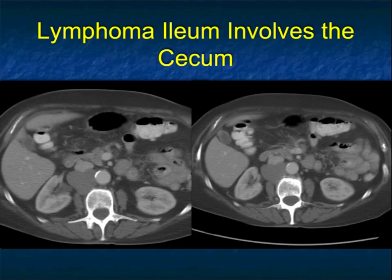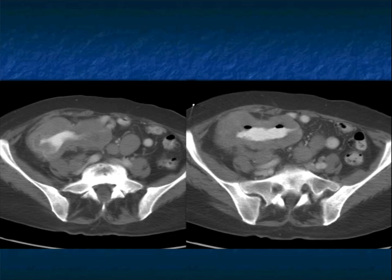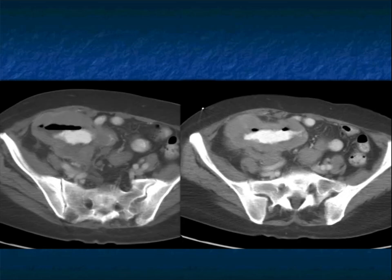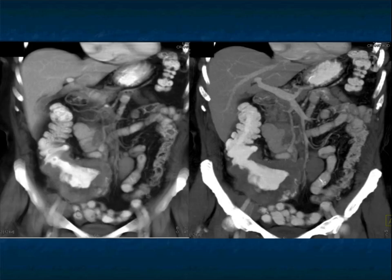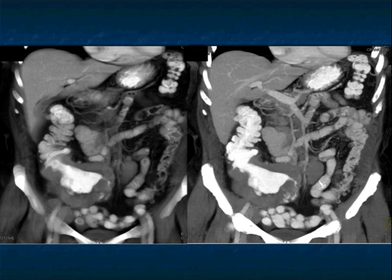Another example: you see a little bit of ascites, some mildly dilated bowel, and bulky nodes in the right peritoneal region. Scanning further downward, there's a large bulky tumor involving the terminal ileum extending to the cecum. You can consider adenocarcinoma, but it's bulky. You can think about GIST tumor, but that's typically exophytic, not so infiltrative. You can think about METs like melanoma — a good thought. But with the large bulky nodes and the infiltration, this is lymphoma infiltrating the ileum extending into the patient's cecum with large peritoneal and pelvic adenopathy.